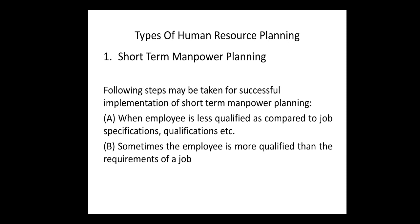Let us discuss the types of Human Resource Planning. There are two types: short-term planning and long-term planning. Short-term planning, as the name suggests, is for a shorter duration of time — that is for one or two years — or it is done for a specific project or assignment given to the organization. The organization need not put so much effort, but it is difficult to find the exact number and type of employees required. In short-term planning, it is concerned with matching existing employees with their present job so that they can perform effectively, rather than recruiting new employees.